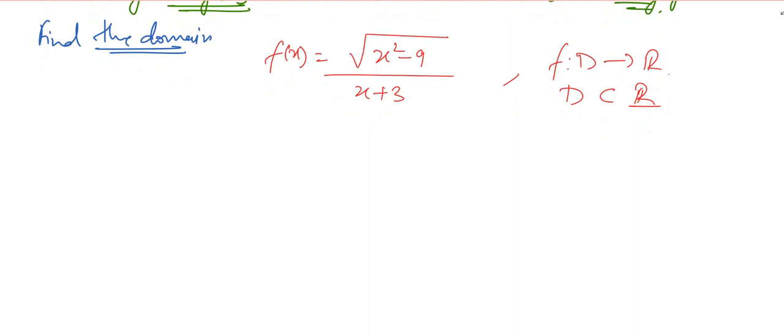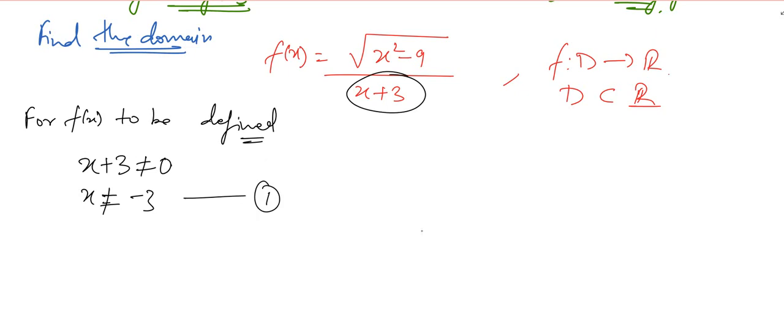For f(x) to be defined, the first thing is that this part cannot be equal to 0 because the denominator can't have 0. So x plus 3 should not be equal to 0, so x should not be equal to minus 3. Let us take this as equation 1.